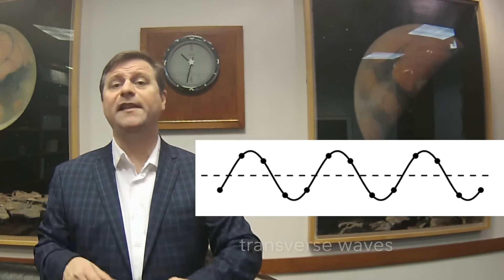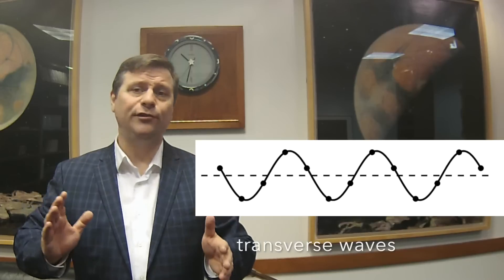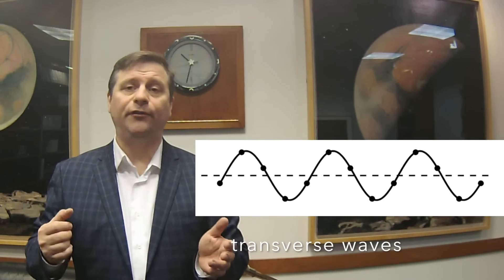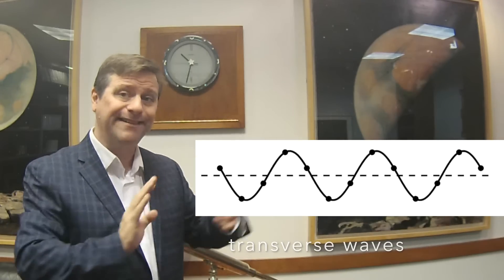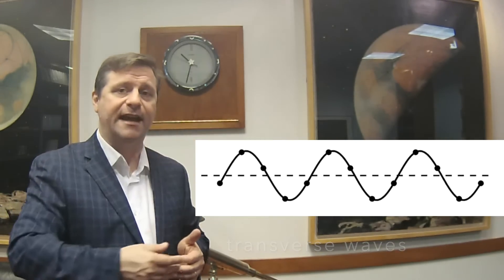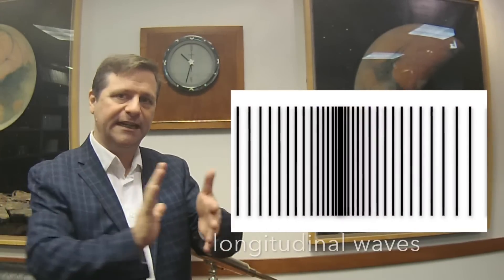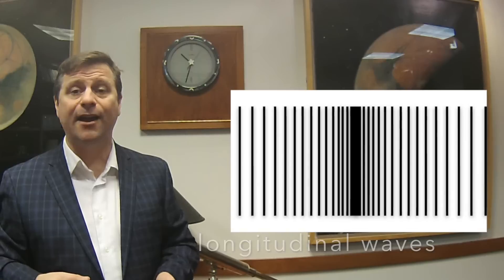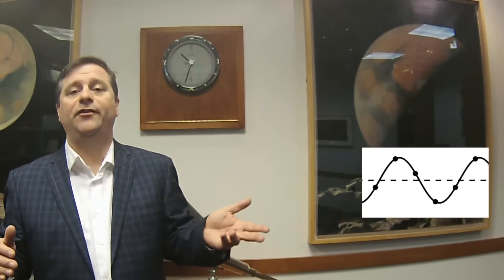In 1821, Fresnel and Young advanced even further and proved that all light was a transverse wave with no longitudinal component. Sound waves are compression waves where things compress — longitudinal — but you can also have transverse waves like water waves going up and down. Waves of pressure go in and out as the wave progresses, or waves can move up and down perpendicular to the direction of travel, like water waves. Water waves go up and down as they travel — that's transverse.